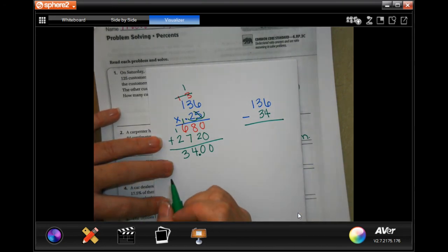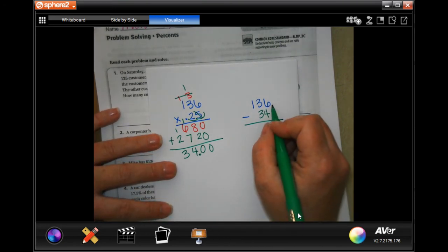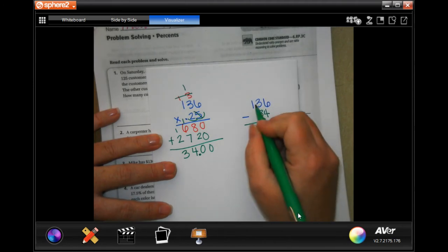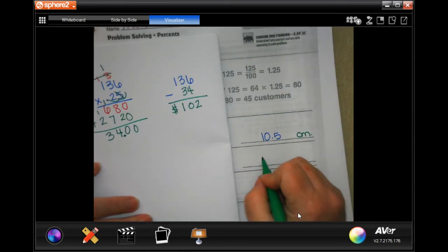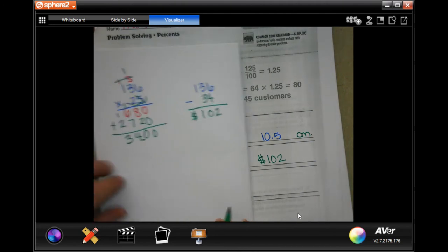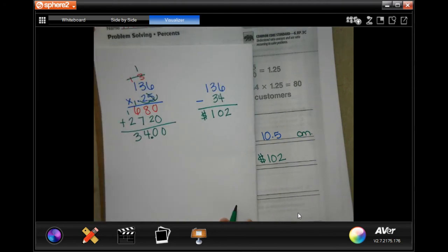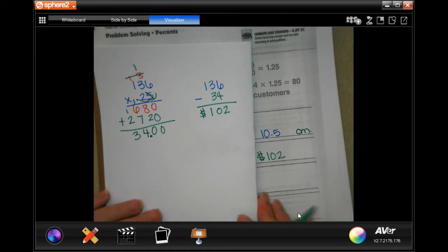I don't need to put the decimal 0, 0. So, 6 minus 4 is 2. 3 minus 3 is 0. And, 1. Bring it down. He has $102 left. The dollar sign is your word label for this one. Write down your work, guys. Pause it. Rewind it. Do whatever you need to do. Write down your work.